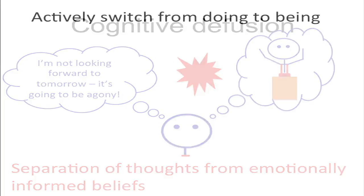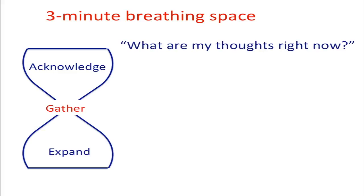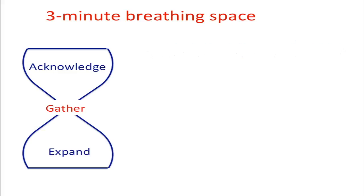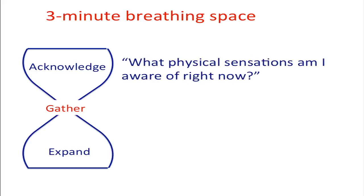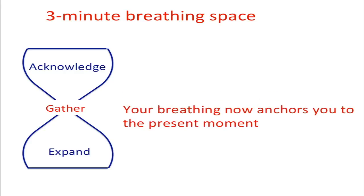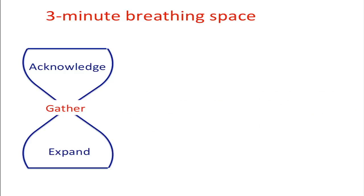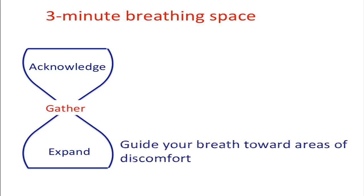To achieve cognitive diffusion we must actively and purposefully switch from doing to being. A good place to start is the three-minute breathing space, whereby we acknowledge, we gather, and we expand. First we acknowledge our thoughts, our emotions, and our sensations. Then we move purposefully to our breathing, which brings us back to the present moment. And then we expand, which includes areas of discomfort.